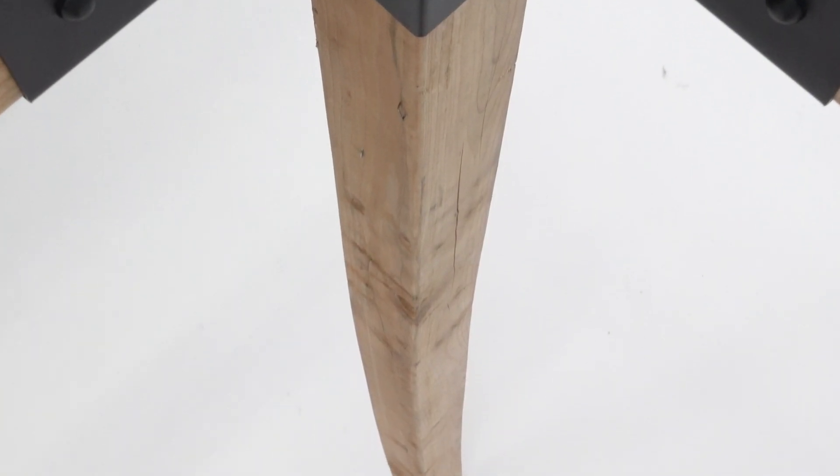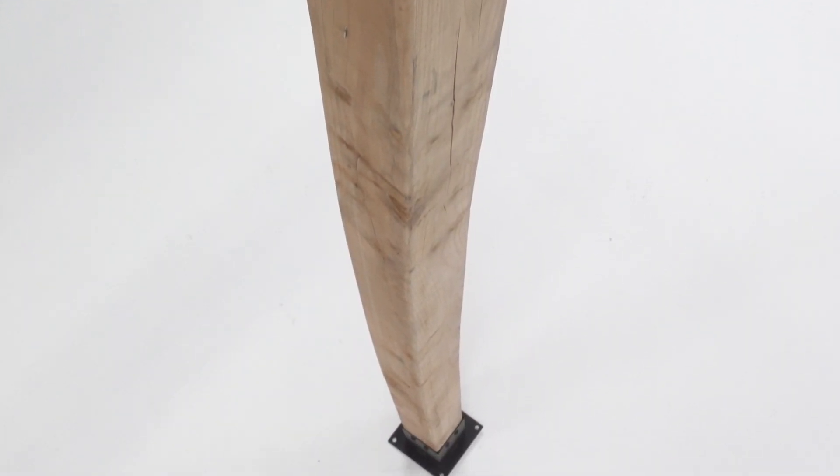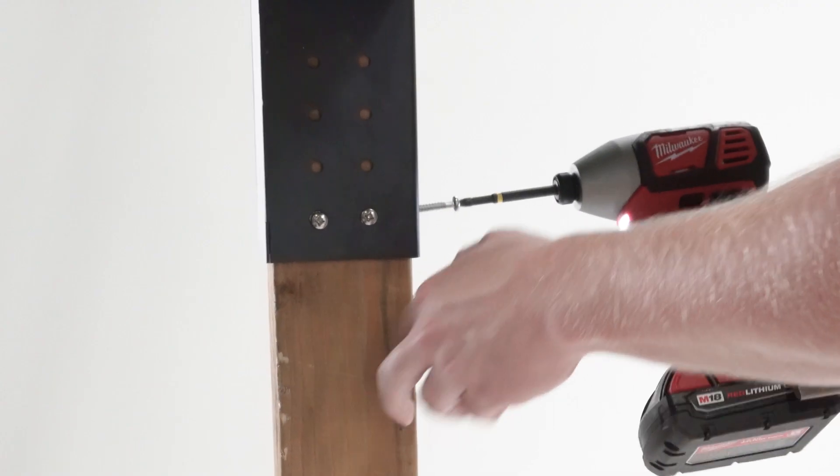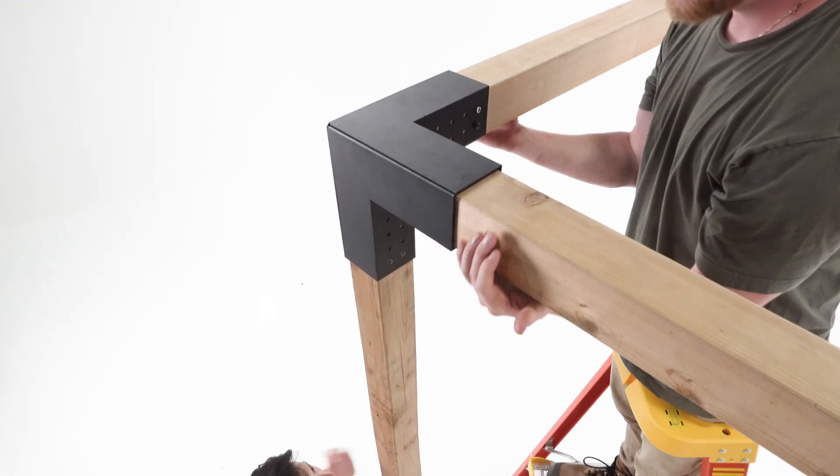To replace a cracked, warped, or twisted piece of lumber, simply unfasten the screws, remove the lumber.